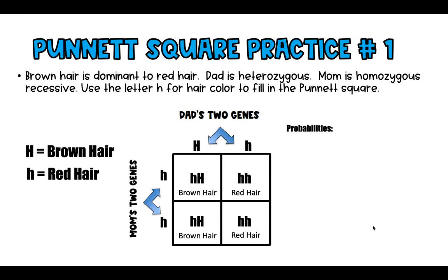Now for probability: what's the percent chance the child will be born with brown hair versus red hair? Half the squares are brown and half are red — just like flipping a coin. It's a 50% chance for brown hair and a 50% chance for red hair. The ratio is 2:2, dominant to recessive — two outcomes with brown hair and two with red hair.